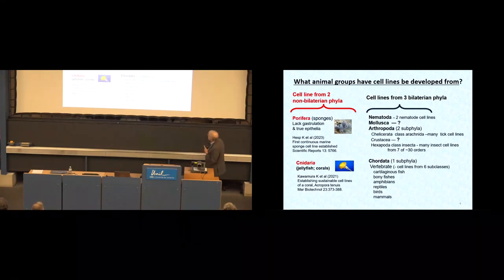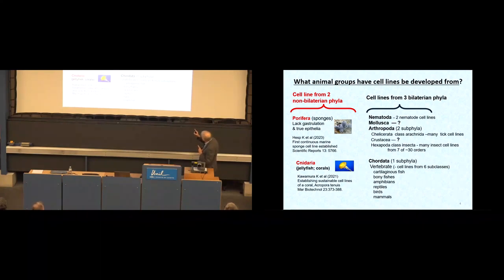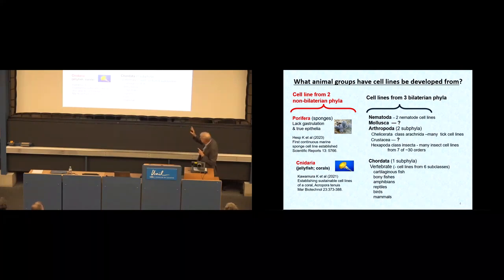So what animal groups have cell lines been developed from? And of course you can go to Cellosaurus and you can figure this out. But there's two cell lines from the non-bilaterian phyla. The first one is from the sponge. I don't know if it's in Cellosaurus. I was hoping I could make a contribution and point this out. This is only from a few months ago. And in Cellosaurus is one from cnidarian, from a coral. And then cell lines from three or four bilaterian phyla: nematodes, two cell lines; molluscs, there are cell lines listed but I question them; arthropods, there are clearly many cell lines from ticks and an enormous number from insects. And then for the chordates, six of the seven vertebrate subclasses are represented in cell lines.